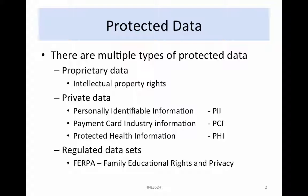Private data contains information that must be redacted before the file can be shared. There are three main types: Personally Identifiable Information (PII), which contains information such as birth dates and social security numbers; Payment Card Industry information (PCI), which contains credit card numbers; and Protected Health Information (PHI), which contains medical records and the patient name.